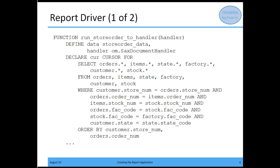Now let's take a look at our report driver. I'm creating the function here — run store order to handler. If you recall from my main module, that was what I called when I was ready to gather the data and have it sent to the report handler. Here we have a simple define, declare cursor, and a select showing that we're extracting data from a database — this should be familiar from any time you've extracted data for a report.